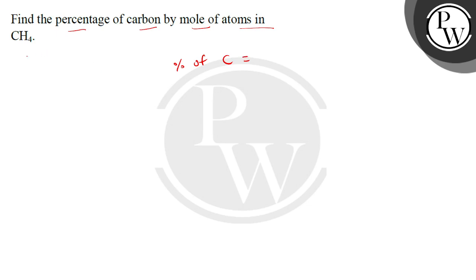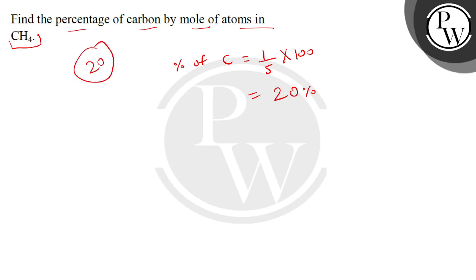If we have one mole of CH4, then the total number of atoms is 4 plus 1, which equals 5. So the percentage of carbon is 1 divided by 5, multiplied by 100, which gives us 20%. The right answer is 20%. I hope you all understood it well. All the very best!